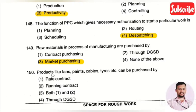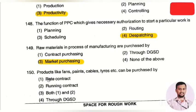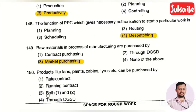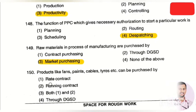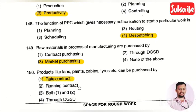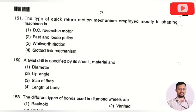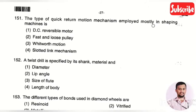The next question: products like fans, paints, cables, tires etc. can be purchased by — option 1: rate contracts, option 2: running contracts, option 3: both first and second, option 4: through DGSD. The right answer is option 1, rate contract. Based on the rate, we can purchase the materials.